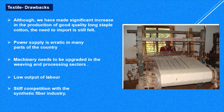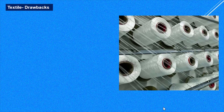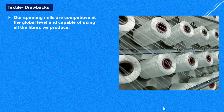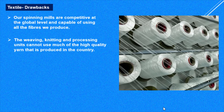Despite these drawbacks, our country ranks number one in the world in cotton production. All that cotton is utilized in making yarn, so our spinning mills are competitive at the global level and capable of using all the fiber we produce. However, weaving, knitting, and processing units cannot use most of this yarn because good quality yarn is exported and is not available to Indian industries. What they get is poor quality, as the good yarn is picked up by developed nations.